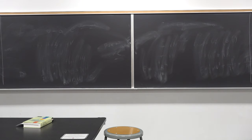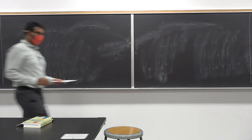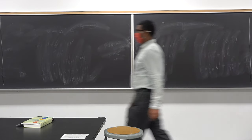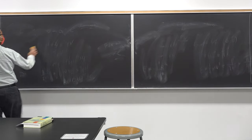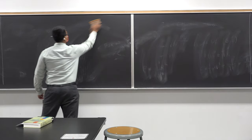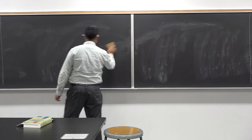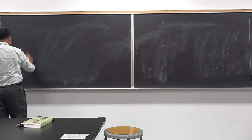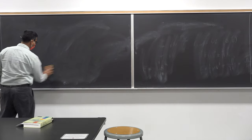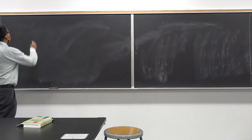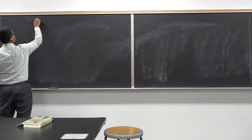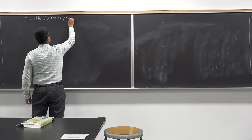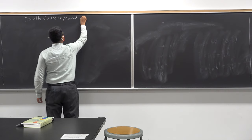Okay, we'll get started with today's discussion. In the previous lecture, we were talking about jointly distributed Gaussian random variables — a special topic we are going to emphasize in this class because it appears a lot in the autonomous control community: jointly normal random vectors.